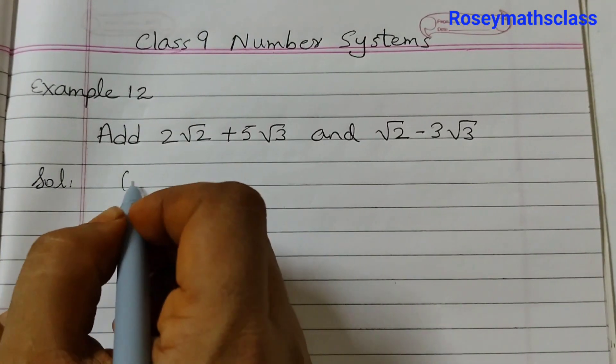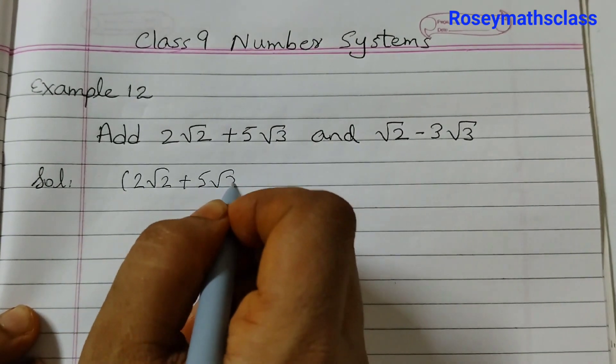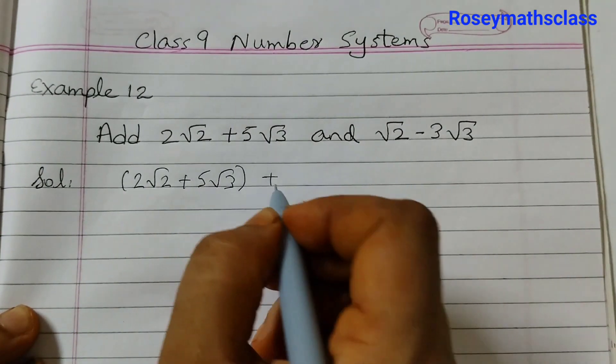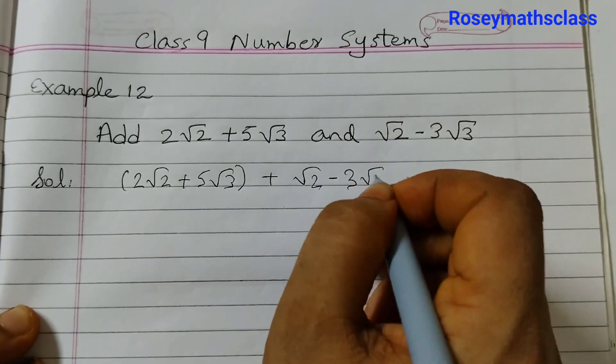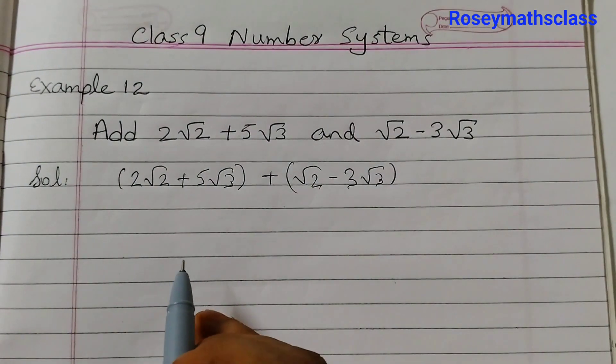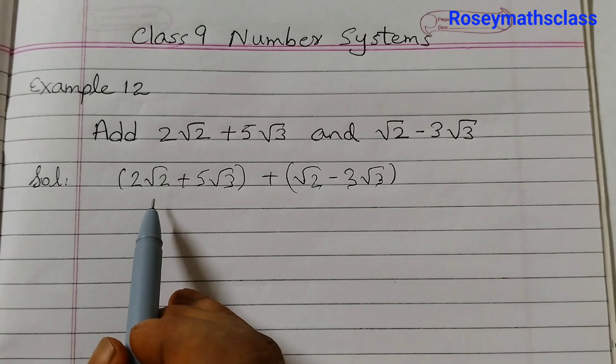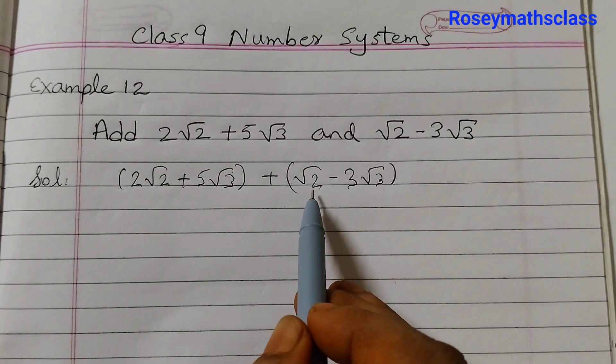So first we will write 2√2 + 5√3 + √2 - 3√3. Then we will see the common terms. Which terms have √2? This one and this one have √2, so we will combine these together.